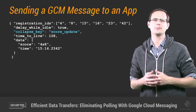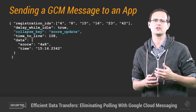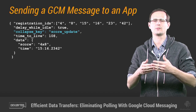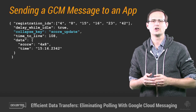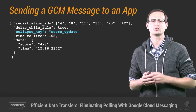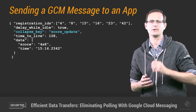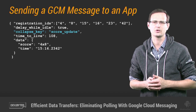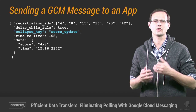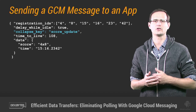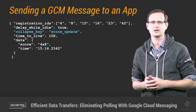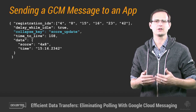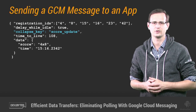The collapse key is any arbitrary string that the GCM servers can use to collapse a queue of messages addressed to the same device. So when the device comes online or becomes active, it receives only one message. There's no guarantee that the message the queue collapses to will be the most recent one you sent, so these messages are known as send-to-sync and are best suited to update tickles that tell your app simply that there is new data ready to download.